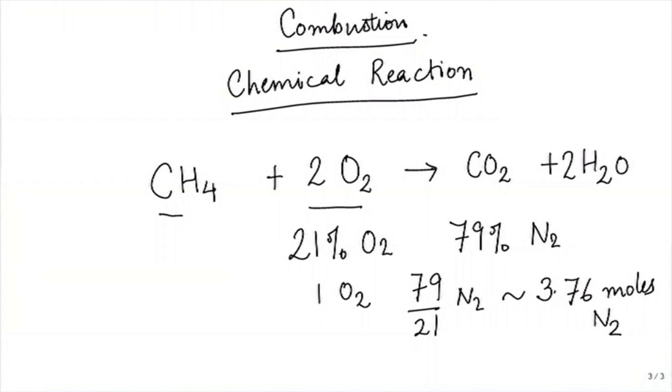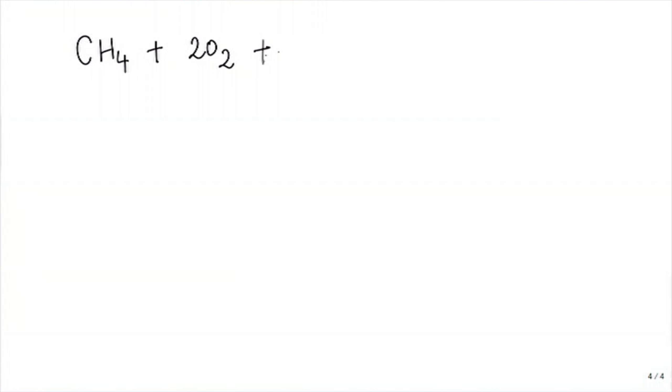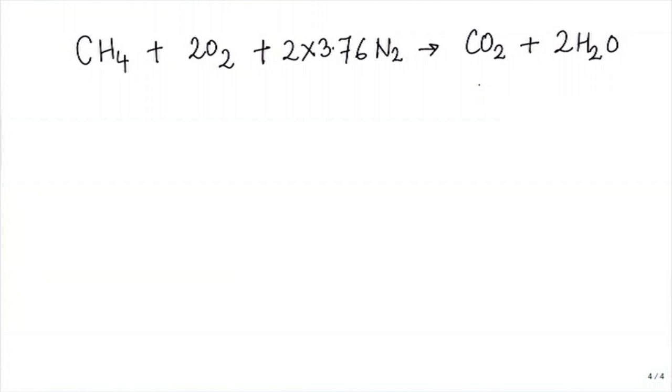The reaction is on a molar basis: 1 mole CH₄, 2 moles O₂, 1 mole CO₂, 2 moles H₂O. In the atmosphere, by volume, there is around 21% oxygen and 79% nitrogen. Since equal moles occupy equal volume, for every 1 mole of O₂ there are 79/21 ≈ 3.76 moles of N₂. Therefore the reaction must be written as: CH₄ + 2O₂ + 2×3.76 N₂ → CO₂ + 2H₂O + 2×3.76 N₂. Nitrogen does not react and is added on both sides.